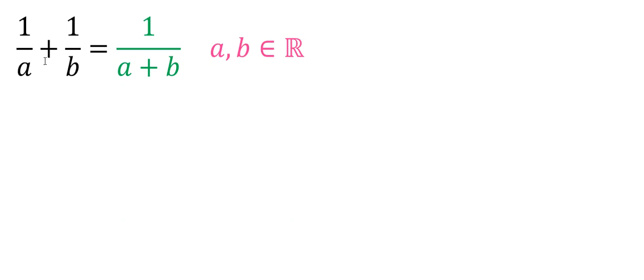A and B are real numbers. 1 over A plus 1 over B equals 1 over A plus B. We want to find what numbers A and B are.